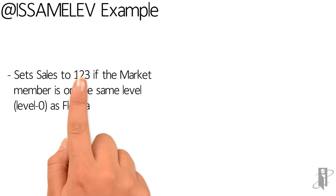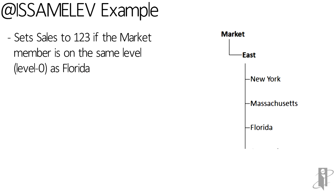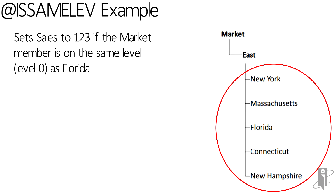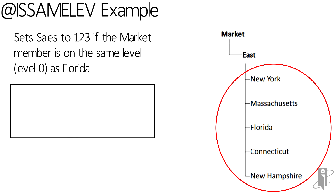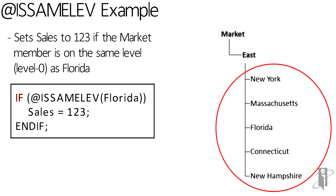So let's say we wanted to set sales equal to 123 if we were down at the states level — meaning Florida or something at the same level as Florida — a state member in our outline with nothing beneath it. We'll just say: if isSameLev Florida, sales equal to 123, end if.